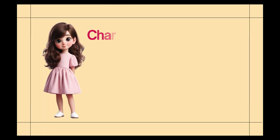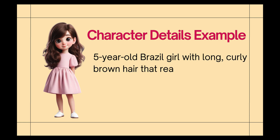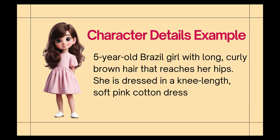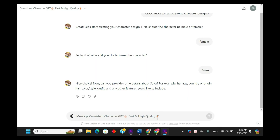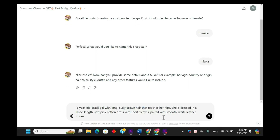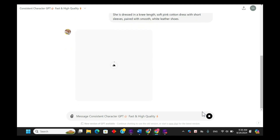Let's see an example of how to describe a character in detail to ensure consistency. Meet our character: a five-year-old girl from Brazil with long, curly brown hair that reaches her hips. She's dressed in a knee-length, soft pink cotton dress with short sleeves, paired with smooth white leather shoes. Now we come back to ChatGPT, input all the details we've provided, and see what happens.